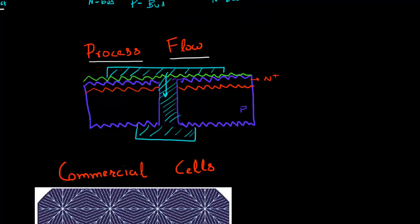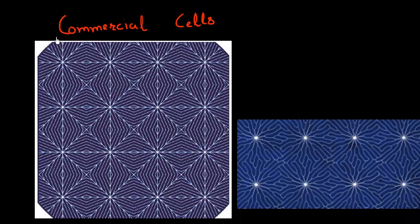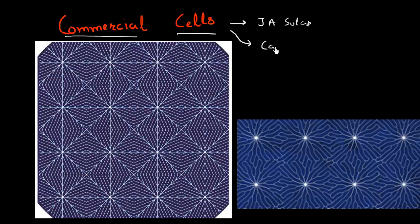So the metal wrap through design is what is commercially available or is being manufactured by many of these solar cell companies. For example, JA Solar is one of the companies that manufactures this. And similarly, Canadian Solar is another company which manufactures these. So these metal wrap through cells, they are in high volume production currently. And you can easily recognize them by looking at the top surface of these cells.